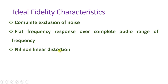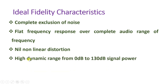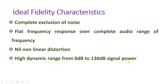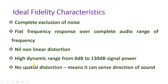There will be nil non-linear distortion in ideal fidelity characteristics, so there will be no non-linear distortion. It will have a very high dynamic range, starting from 0 dB to 130 dB of signal power — from smallest signal to highest signal. There will be no spatial distortion, meaning it can sense the direction of sound in ideal fidelity. These are the ideal characteristics of ideal fidelity.